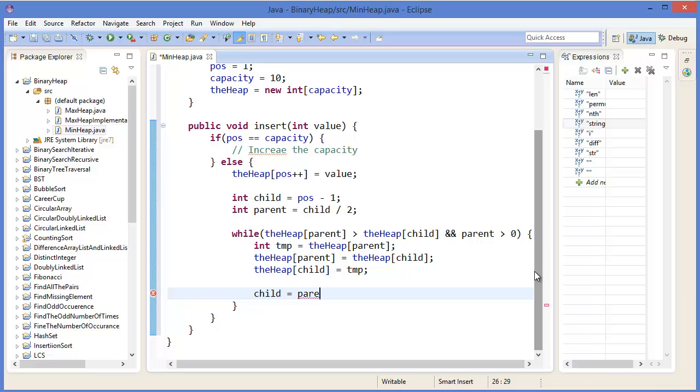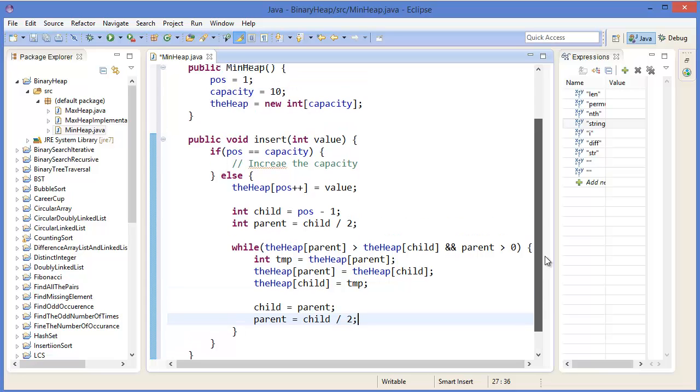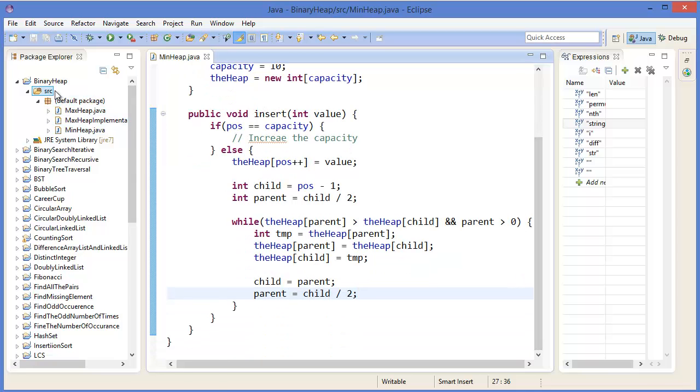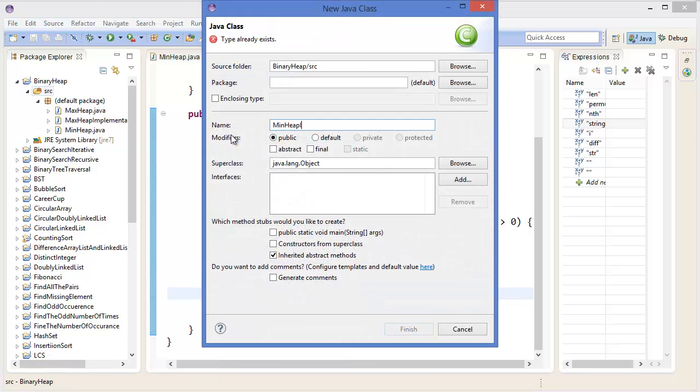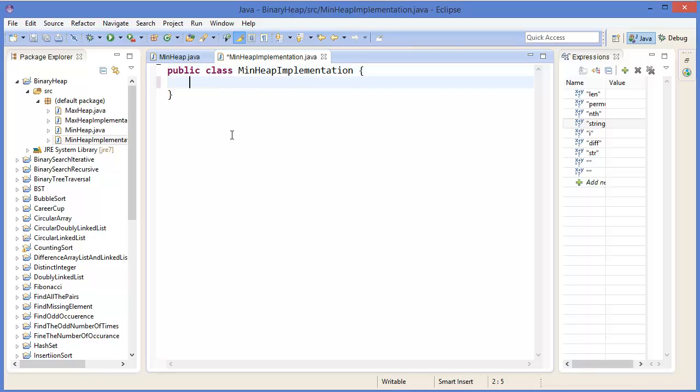All right, now take a class to implement: MinHeapImplementation, public static void main. MinHeap minheap equals new MinHeap.